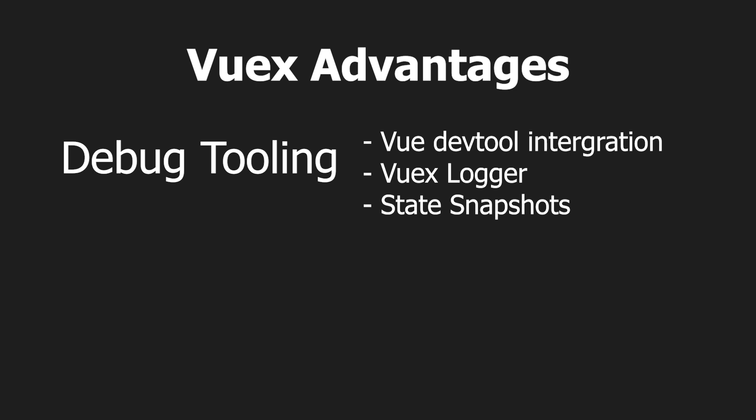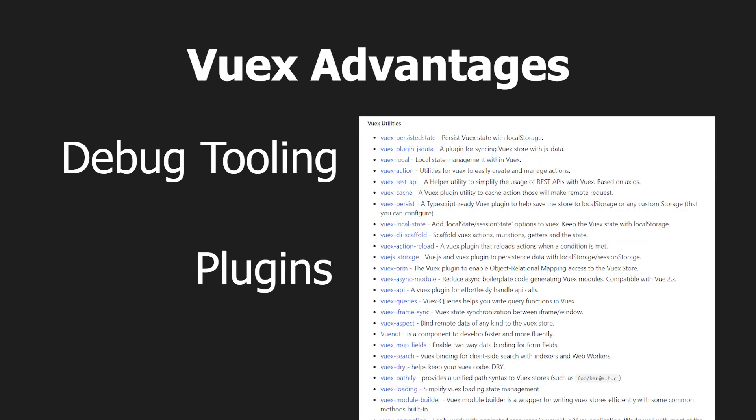In Vuex, all mutations are tracked in the Vuex DevTools, and there's also a built-in Vuex Logger. Vuex also allows you to go back in time to view a previous state of our application. Another advantage is Vuex comes with an ecosystem of plugins, making our lives easier so we don't have to reinvent the wheel. For example, if we wanted our state to be persisted across browser reopenings, we could use the Vuex persistent state plugin, which will sync the state to local storage whenever it changes.